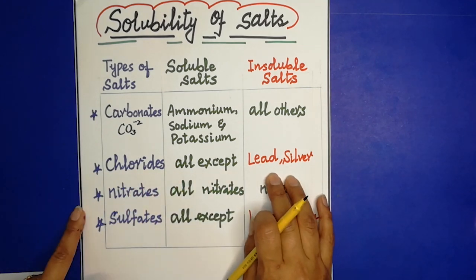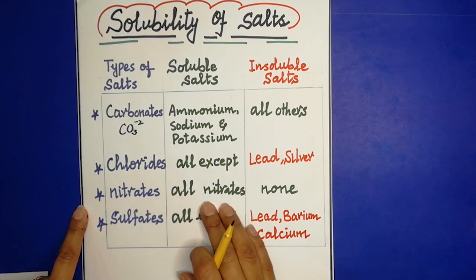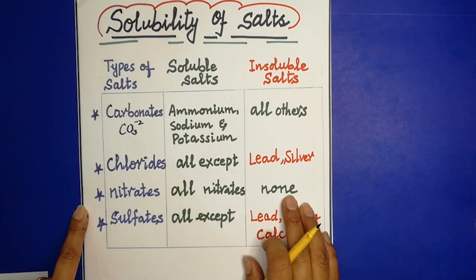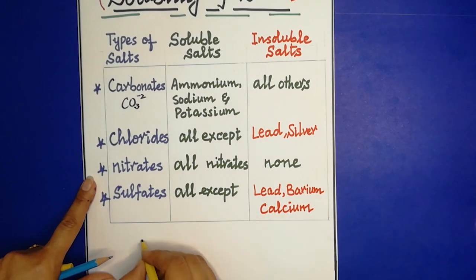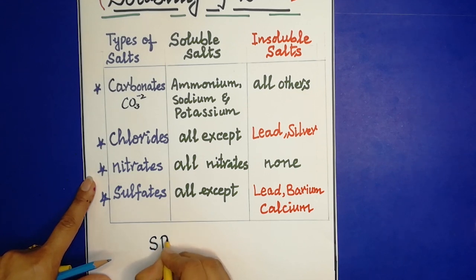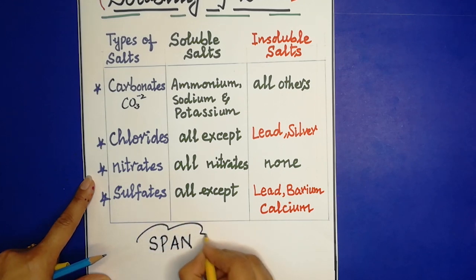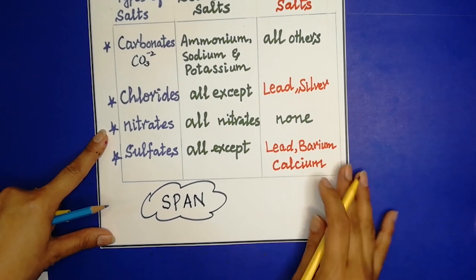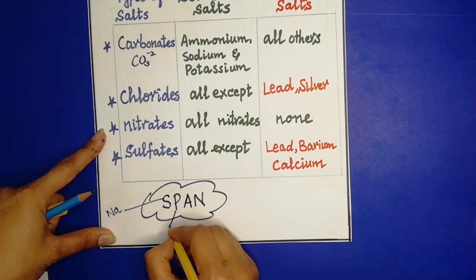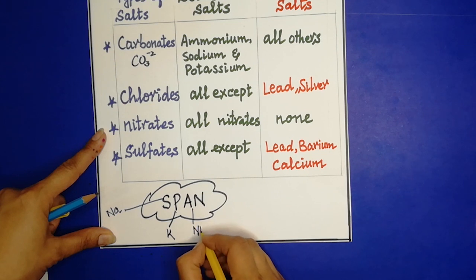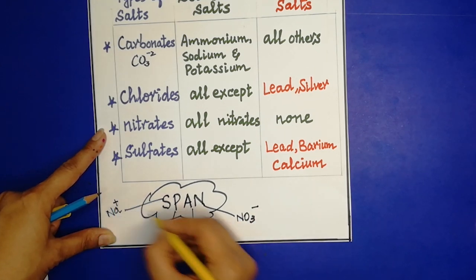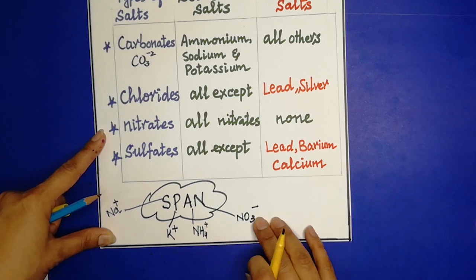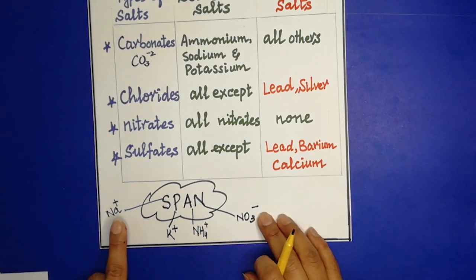except lead chloride and silver chloride — these two are insoluble. All nitrates are soluble; none are insoluble. For sulfates, all are soluble except lead sulfate, barium sulfate, and calcium sulfate. We can memorize the word SPAN to help remember these rules.